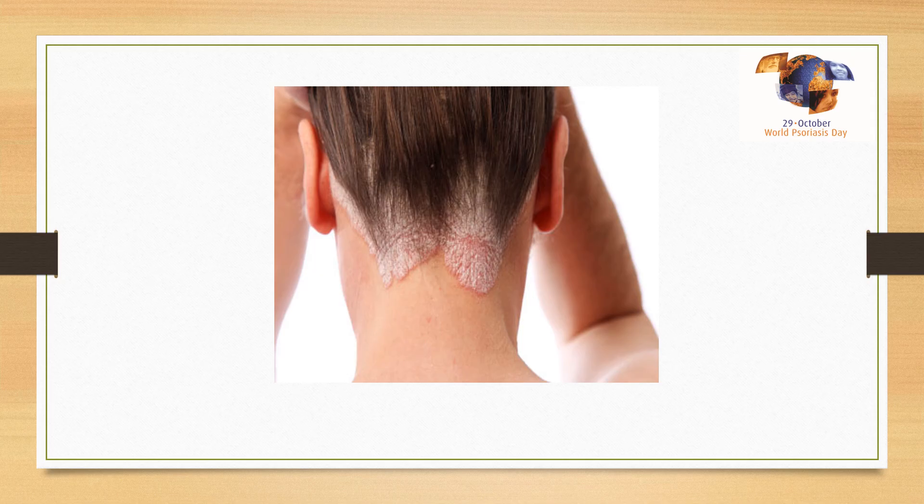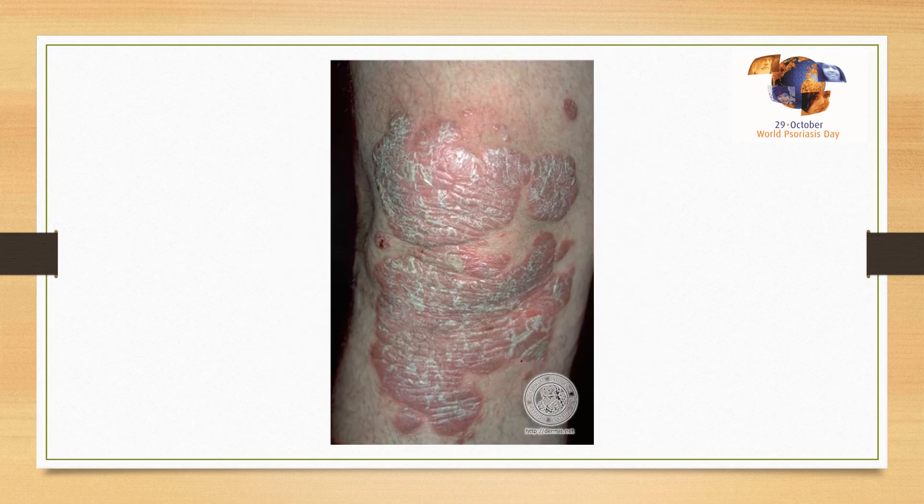Psoriasis is a heterogeneous disease. It can present in different morphologies, different nature of onset, age of onset, and clinical course. But in most cases, it presents as erythematous, indurated, well-demarcated plaques involving predominantly the extensive surfaces of the body like the back, extensive surfaces of the knees, elbows, and scalp. And on the back, the predominant area of involvement is the sacral region.